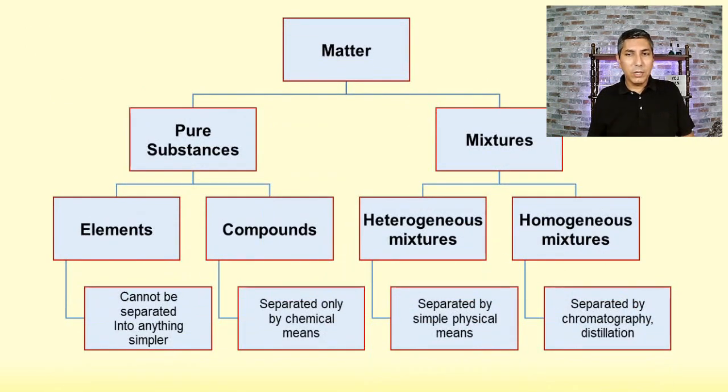Now, if you want to summarize all this, here we have a visual organizer so we can classify all matter essentially. We have everything that's matter up here at the top and we can classify that into either pure substances or mixtures. And there are two types of pure substances. We have elements and we have compounds. And likewise, there are two types of mixtures, heterogeneous and homogeneous, which we usually call solutions. So I hope you learned something about how to classify matter here.